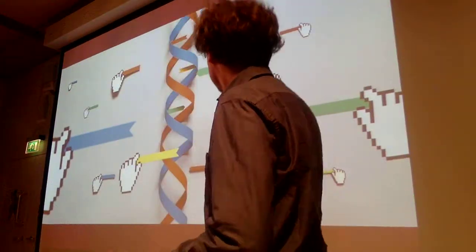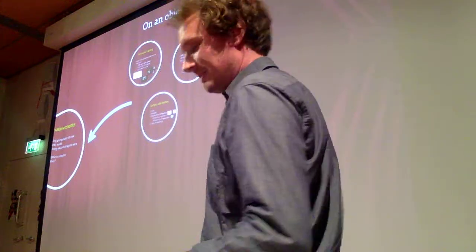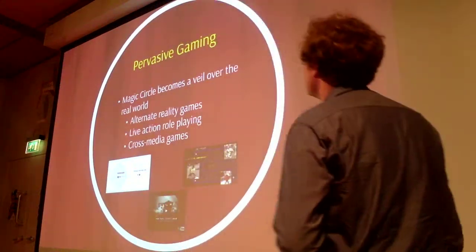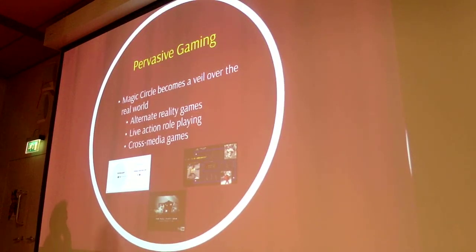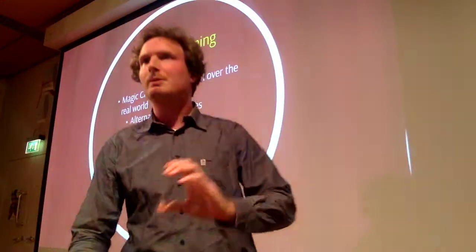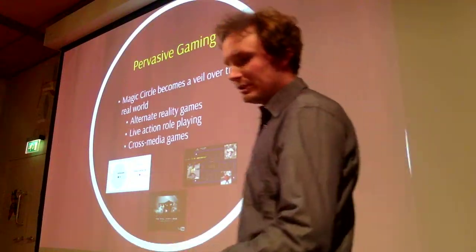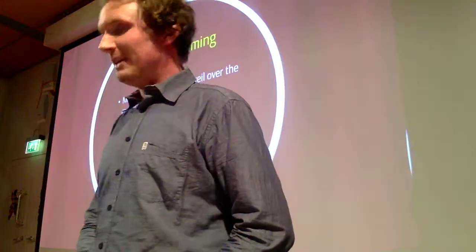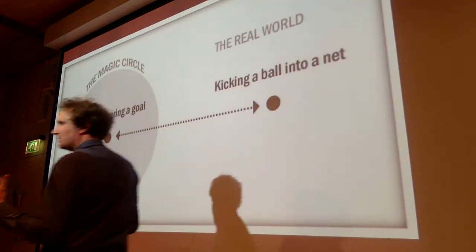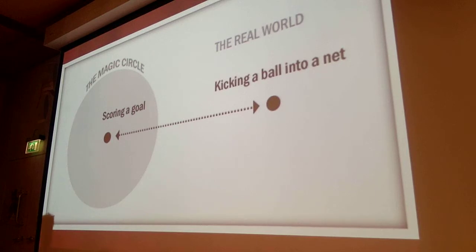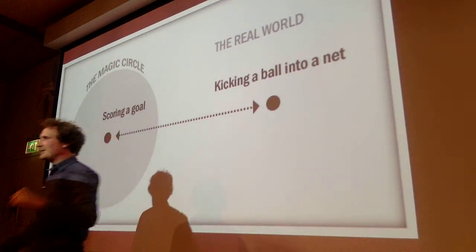On a meta level, we're going to use pervasive gaming. Pervasive gaming is basically where the magic circle — a term coined by a Dutch researcher who defined the game — describes how we attribute different meanings to events. So if in the real world I kick a ball into the net, that's one thing.